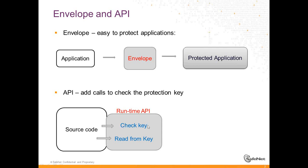The APIs include things like: check that the key exists, check that there is a license. For instance, you can check whether feature number seven exists on this key, or you can read from the memory of the key or write to the memory of the key. All this kind of manipulation allows you inside the source code to make sure that when you run the application there is a verification that the license really exists and everything works as you want. We recommend using both the envelope and the API, not just one of them, because this way you get the highest security.